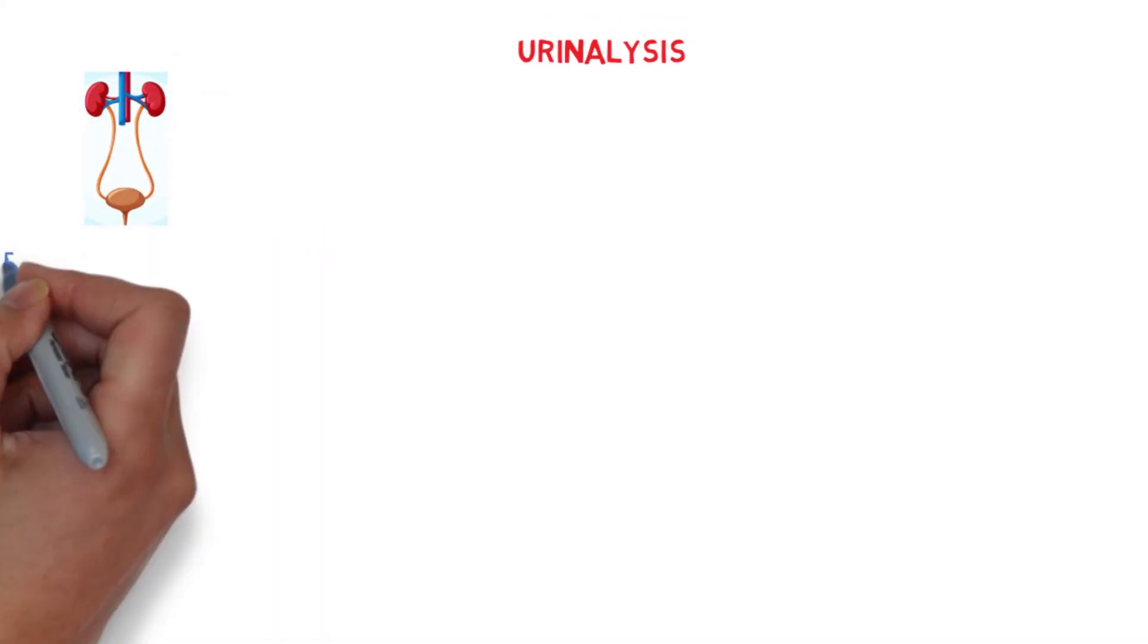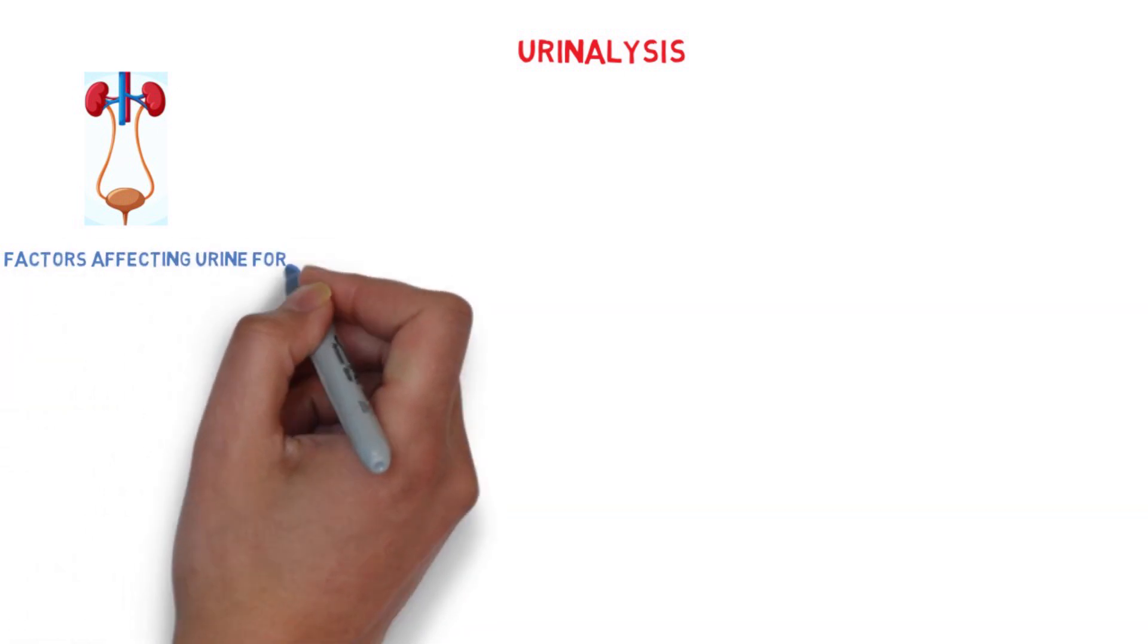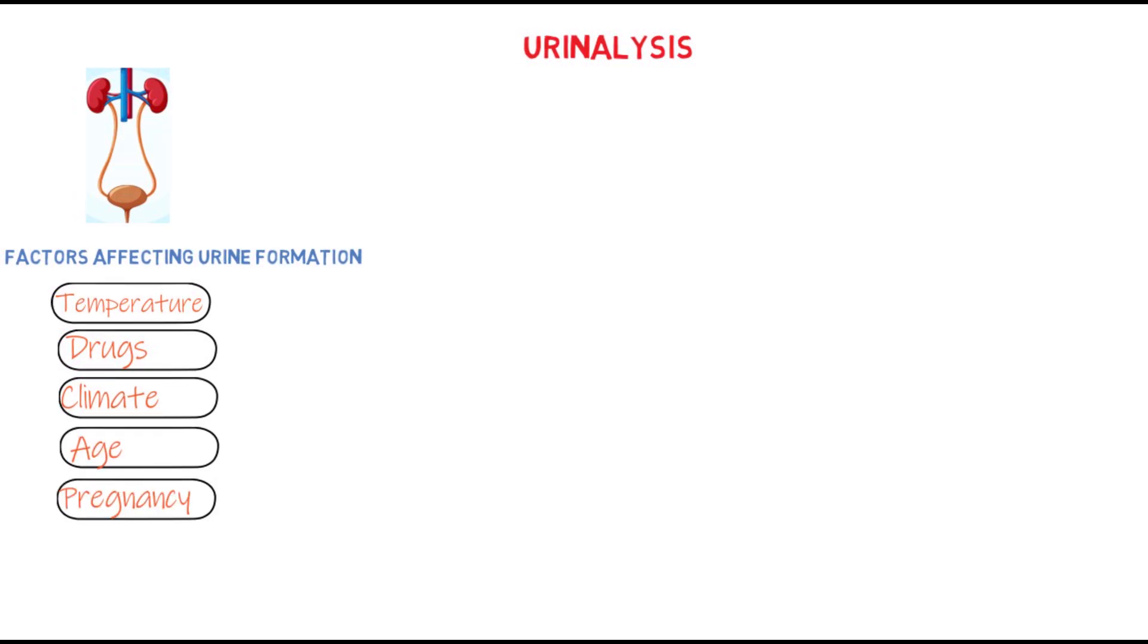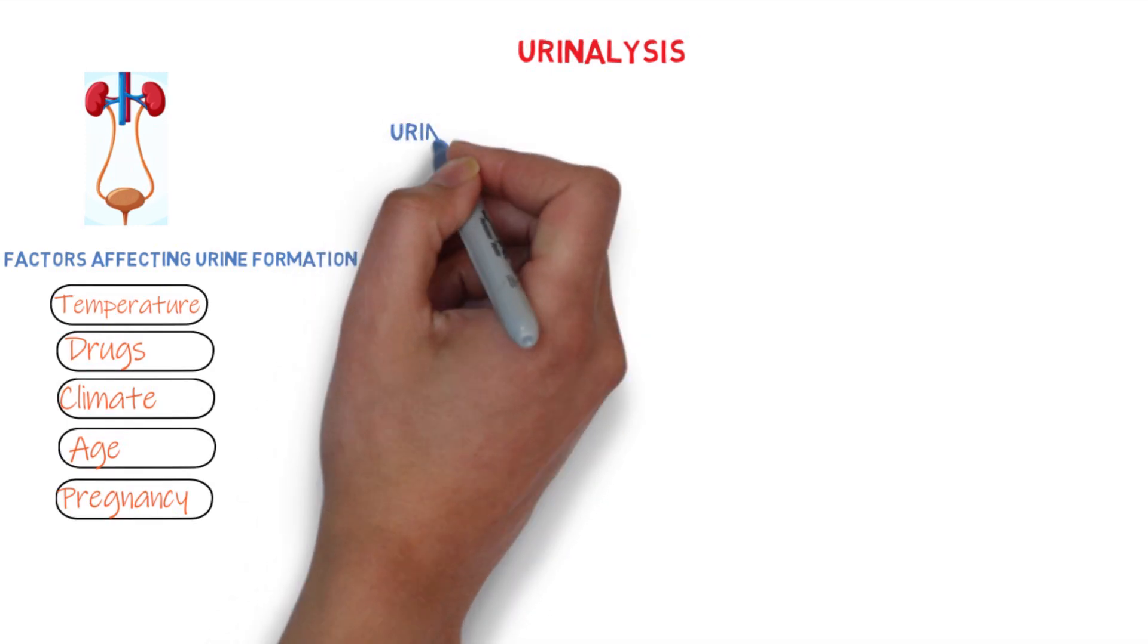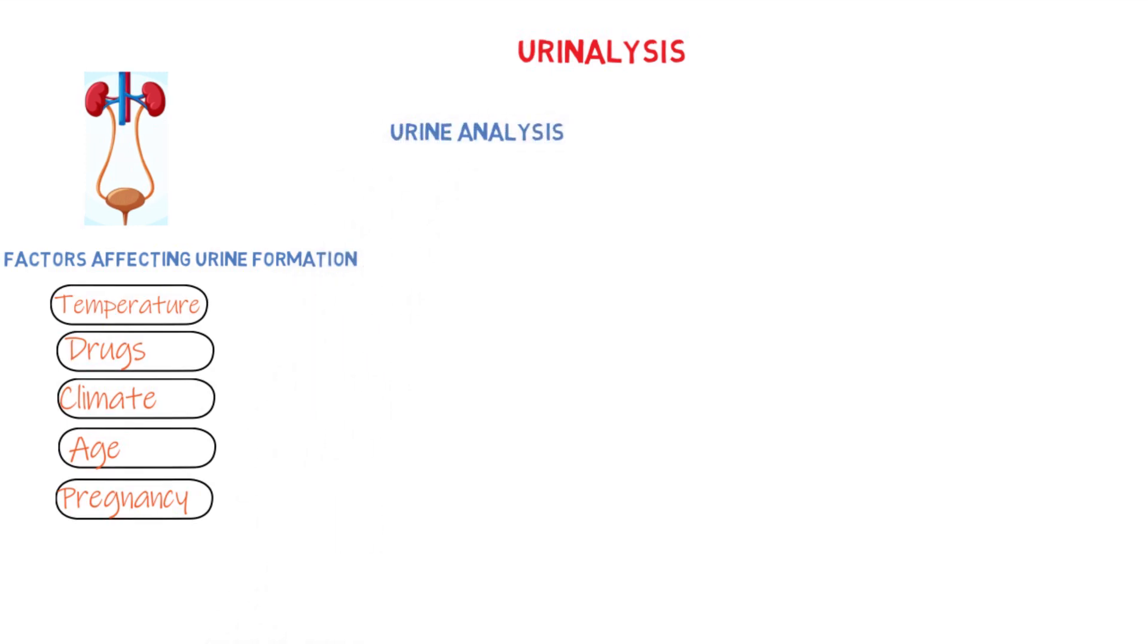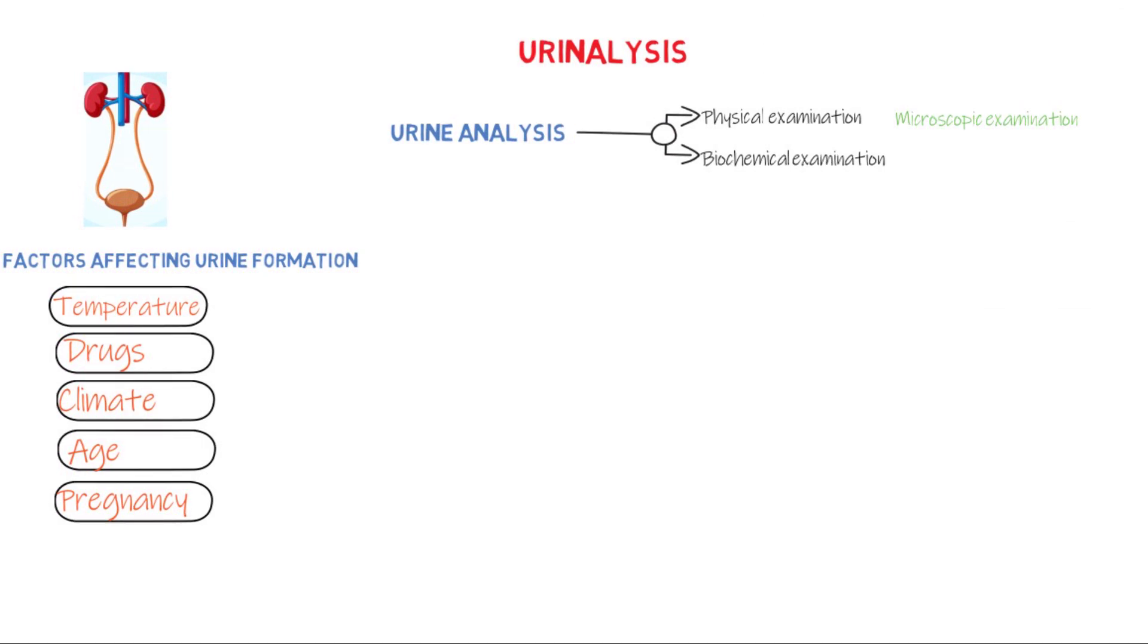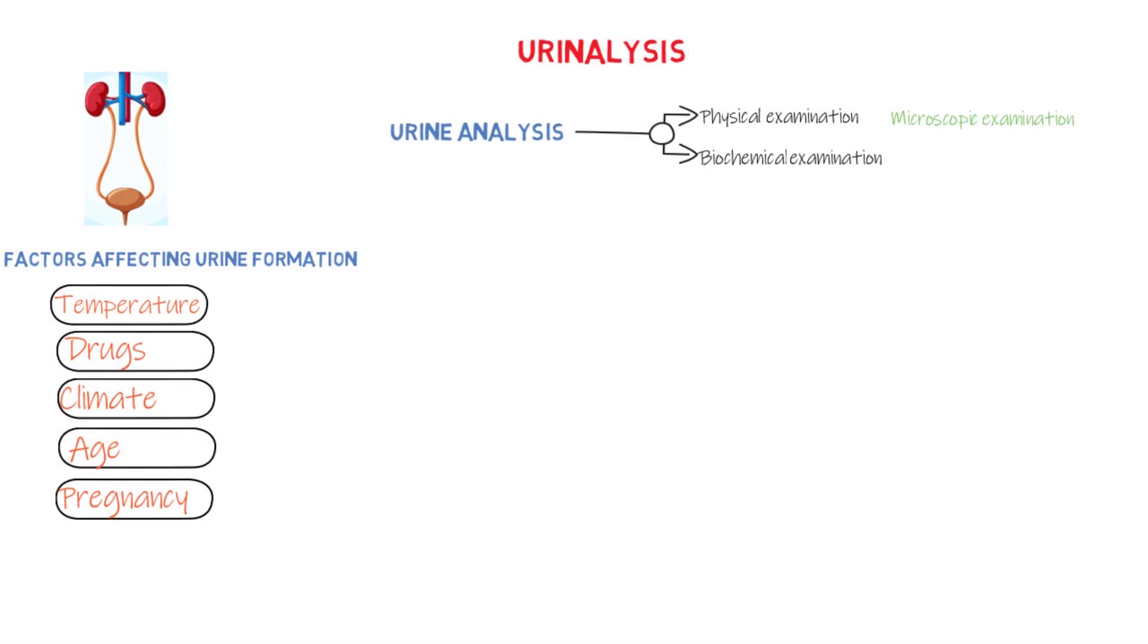Urine is formed in the kidney, and there are several factors that affect this whole process of urine formation. There are factors like temperature, drugs, climate, age, and even conditions like pregnancy. Urinalysis is usually done under two major groups, which are the physical and biochemical examination.